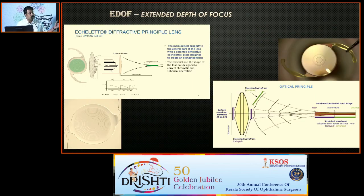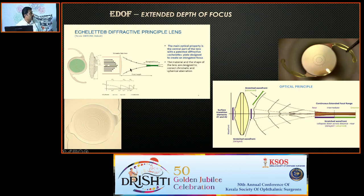How EDOF works: if you look at the lens, you can see something is visually different. The Symphony lens, for example, has a step pattern on the posterior aspect, and that step pattern creates the diffractive elongated focal point. Because of these diffractive rings, patients will have some glare and halos.